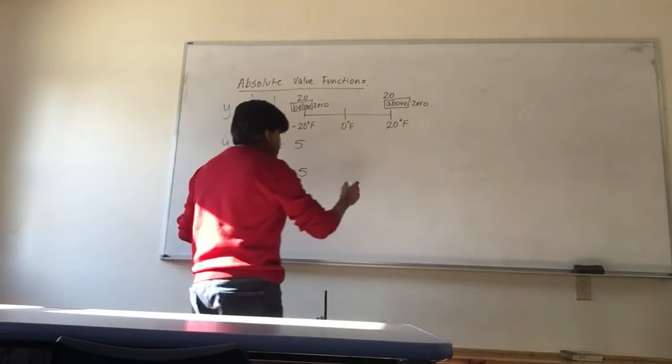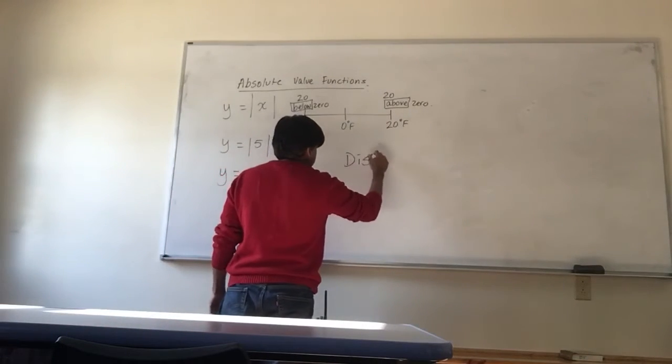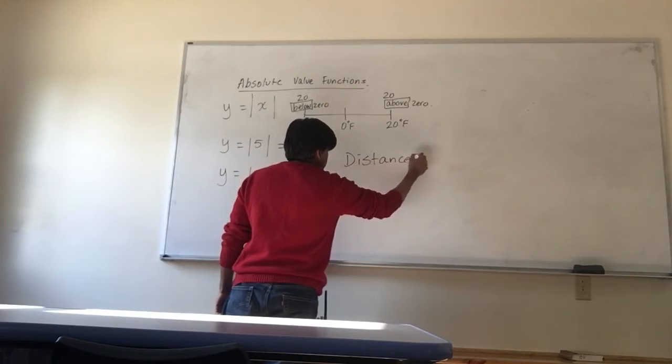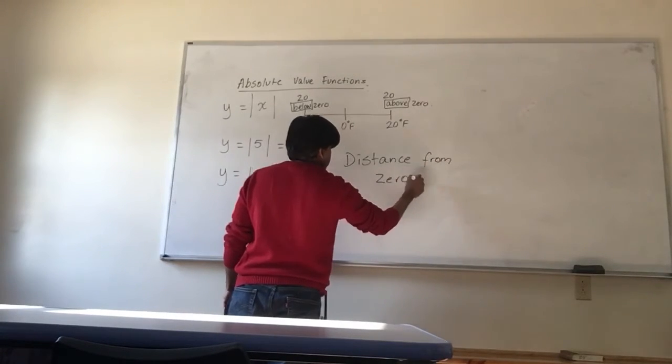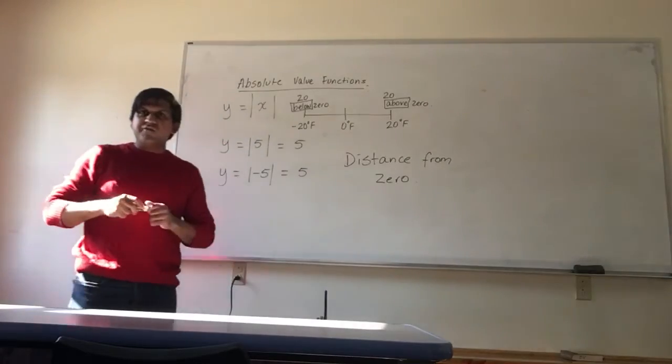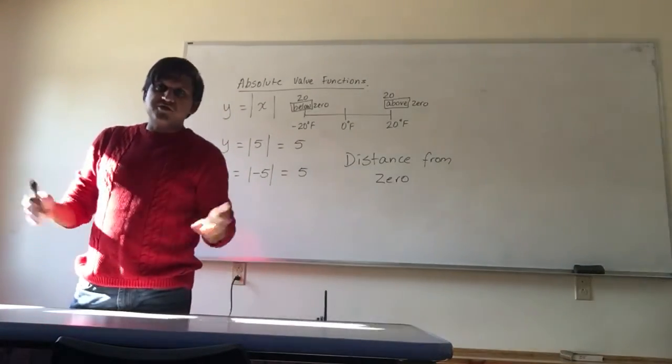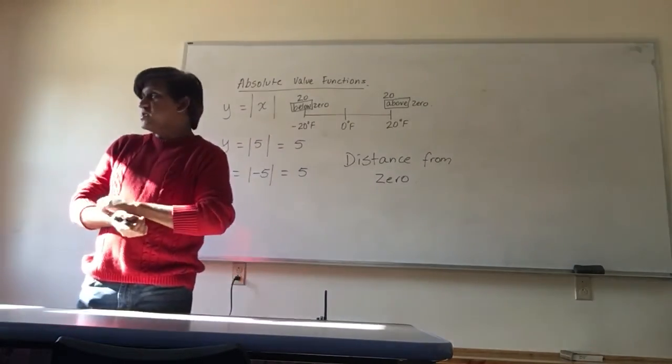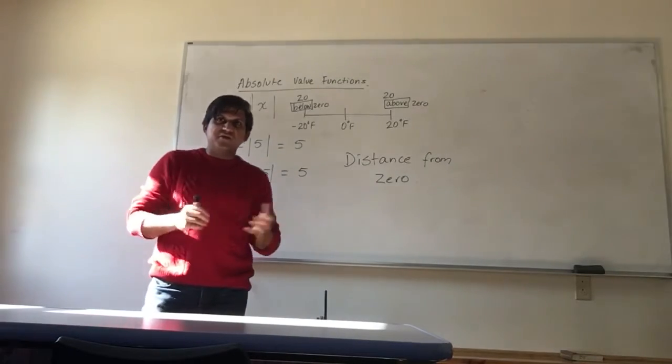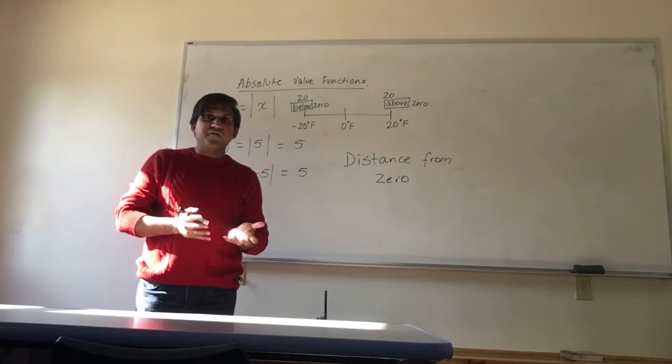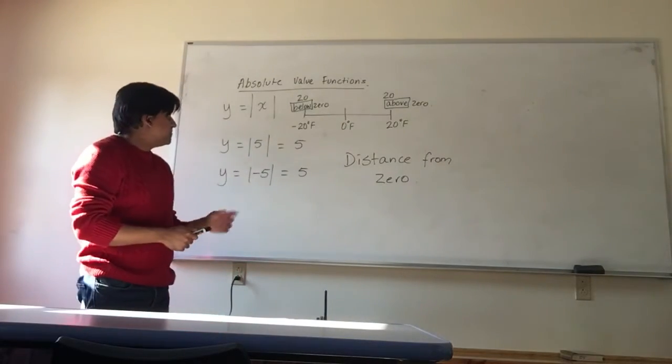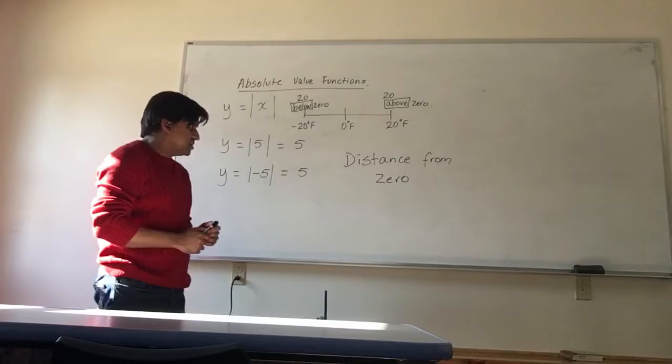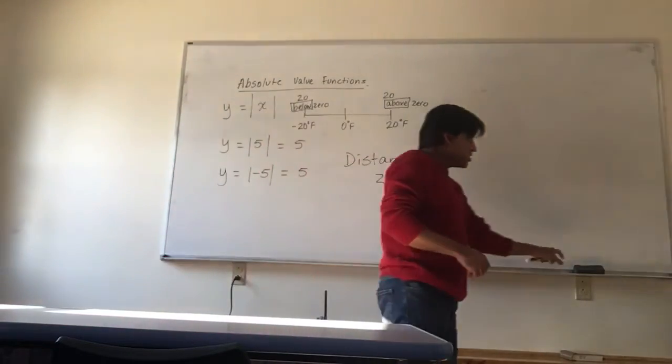So it's just taking the distance from 0. It does not take the positive or negative aspect into consideration. So how far is negative 5 from 0? 5 units. How far is positive 5 from 0? 5 units. And that's how absolute value function comes into play.